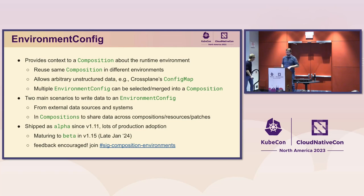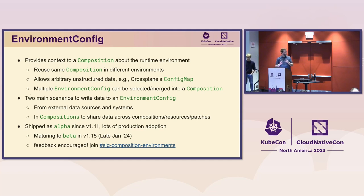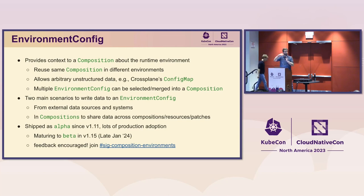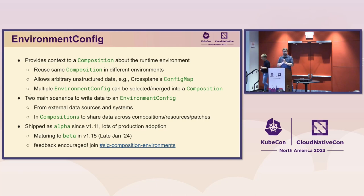We're about to talk about a part of the ConsenSys platform that heavily uses the Crossplane feature called environment config. A good way to think about it is that it provides runtime information to your Crossplane compositions. You can write a single composition and have it run in different environments with different environmental contexts — dev, staging, production — and that single composition can behave differently because of this environmental input.